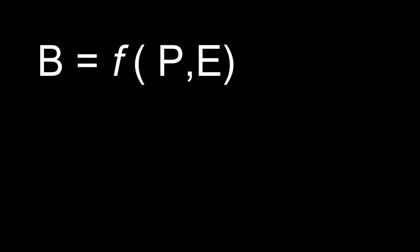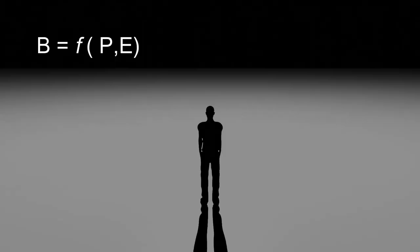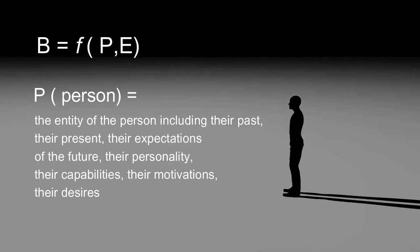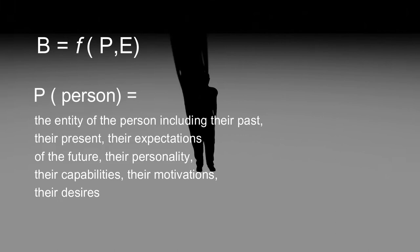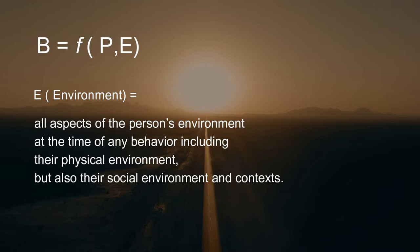The equation he found is: B equals f(P, E) — Behavior is equal to a function of P and E. P refers to the person that you are, and E refers to the environment. The person includes their past, their present, their expectations of the future, their personality, their capabilities, their motivation and desires. Environment is all aspects of the person's environment at the time of any behavior, including their physical environment.